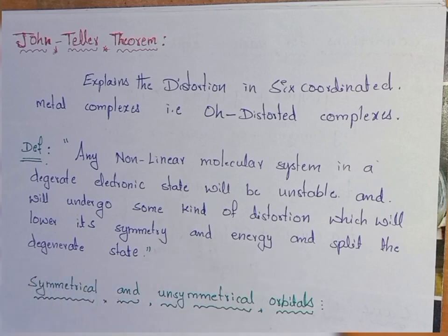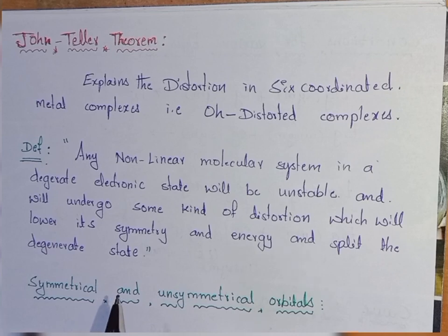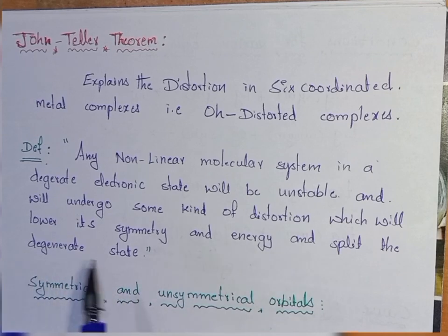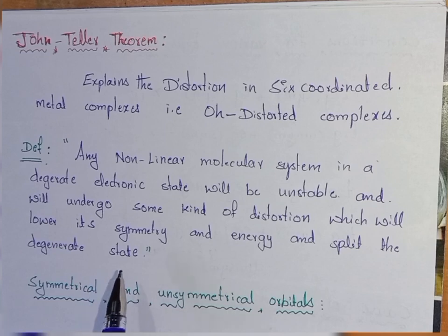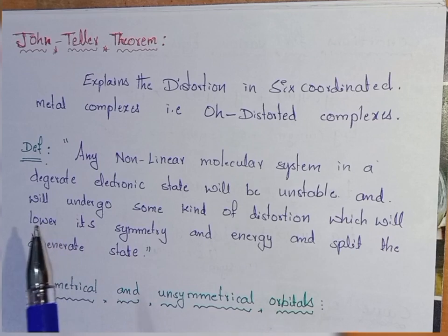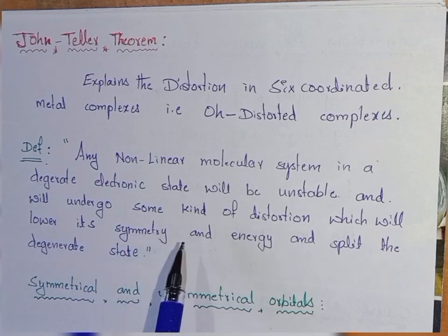That means, in its degenerate electron state, it will be quite unstable. By undergoing distortion, it will get stability, but by the distortion, it will go lower into symmetry and the degeneracy of the orbitals will be split into different states. That is the theme of the Jahn-Teller theorem.